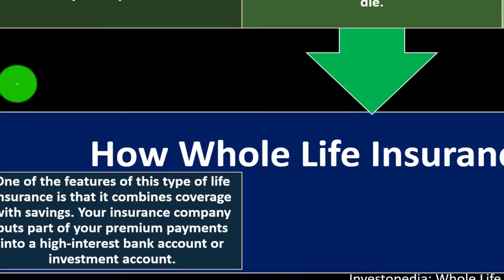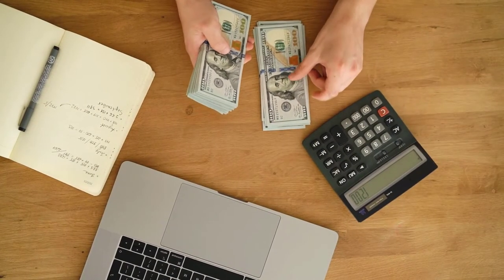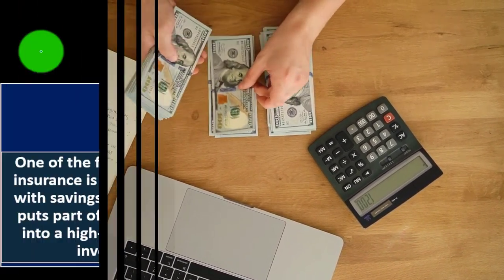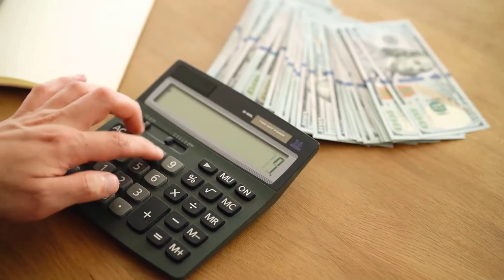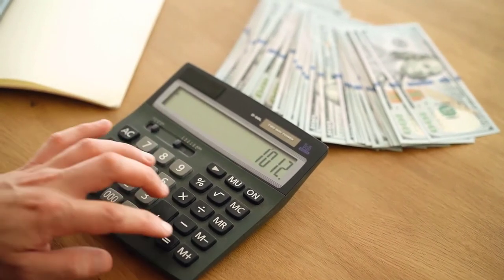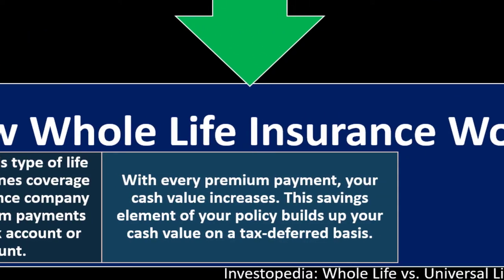How whole life insurance works: one of the features of this type of life insurance is that it combines coverage with savings. Your insurance company puts part of your premium payments into a high-interest bank account or investment account. With every premium payment, your cash value increases. This saving element of your policy builds up your cash value on a tax-deferred basis. That's the tax component — you might ask, what if I just bought a term policy and invested the difference in a 401k plan or an IRA?